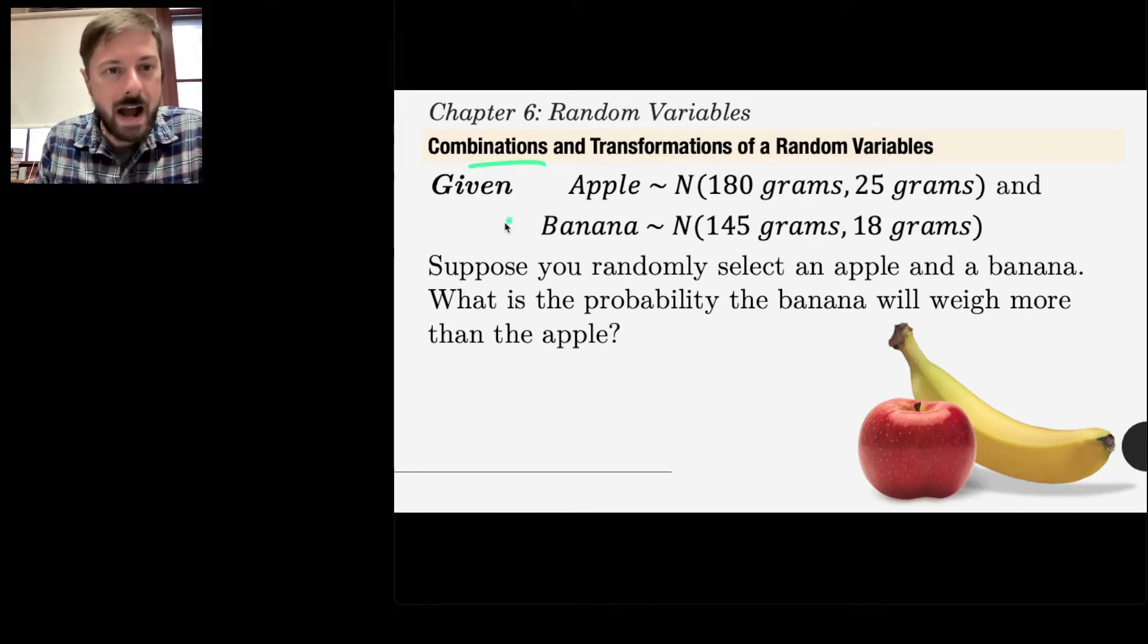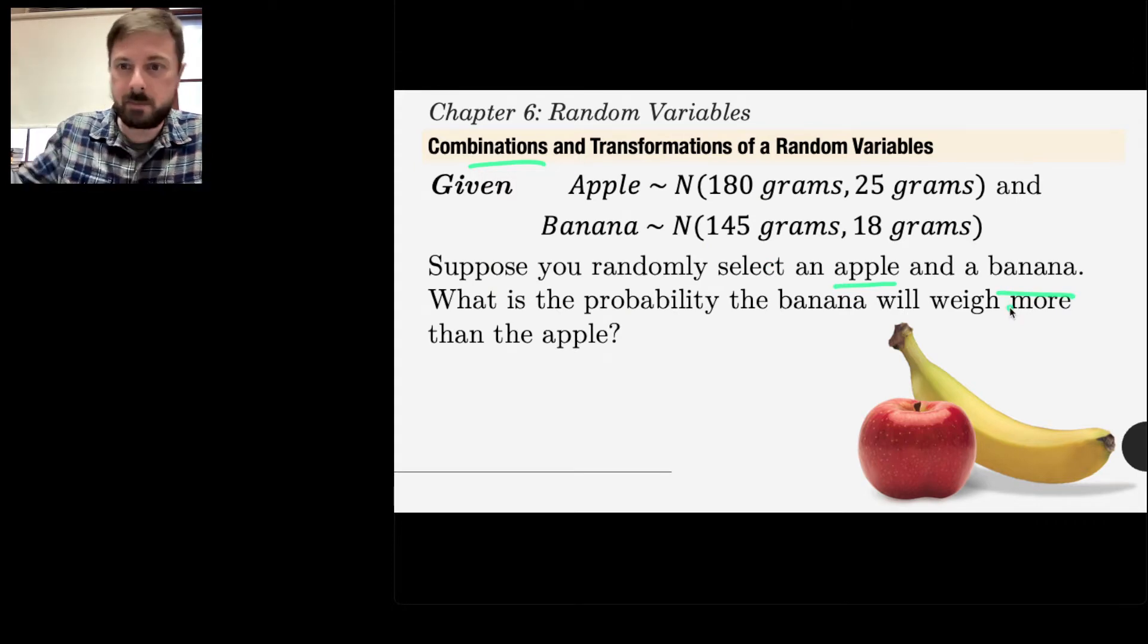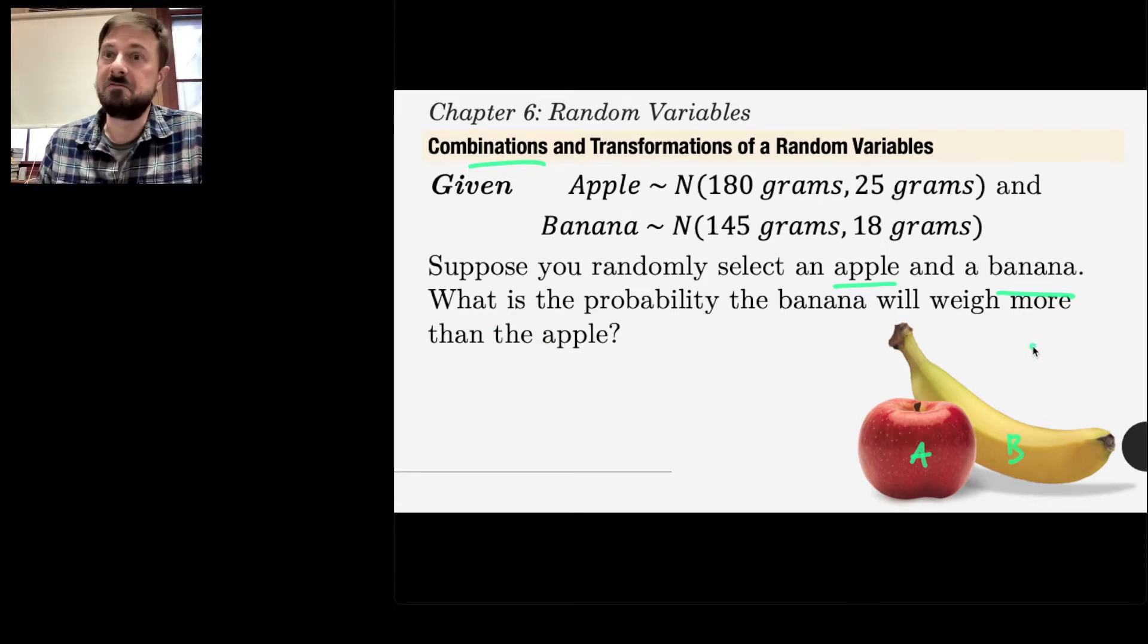Imagine that I gave you some facts here about apples and bananas. Based on these facts, let's consider this question. Suppose you just randomly select an apple and a banana, some random apple, some random banana B. What's the probability the banana will weigh more than the apple? I don't know. How can I figure that out?